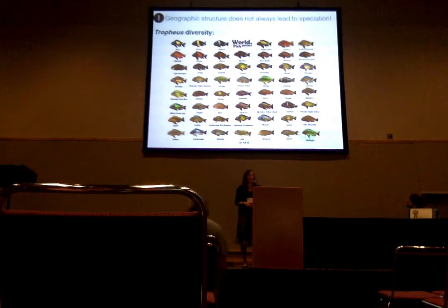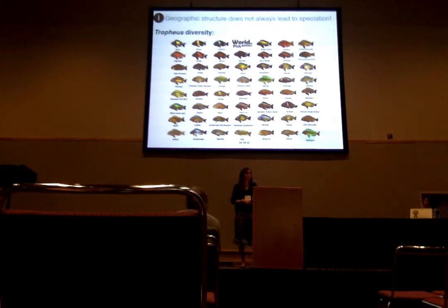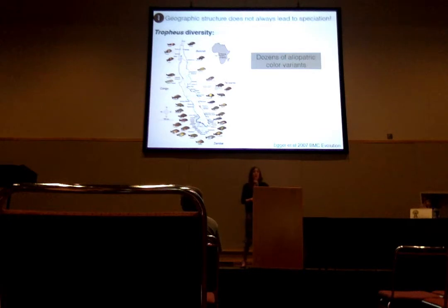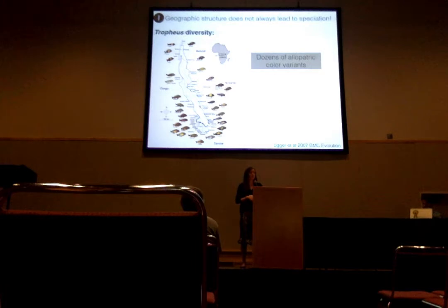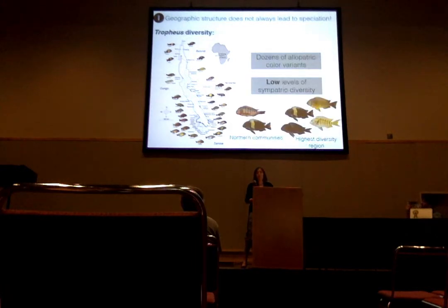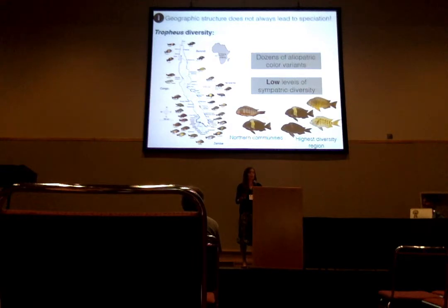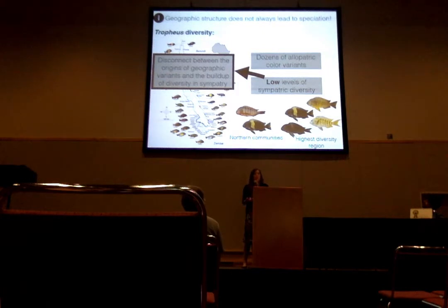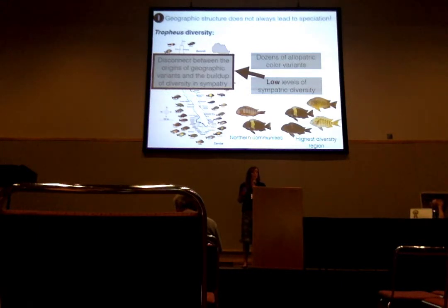To illustrate how geographic structure does not always lead to speciation: one fantastic case of morphological diversity in Lake Tanganyika is the genus Tropheus, which has dozens of allopatric color variants distributed at distinct rocky patches around the lake. But there are low levels of sympatric diversity in this genus — most of the lake has only two of these types together, and a restricted part of the lake has up to four. This suggests that although Tropheus has no trouble forming geographic variants, there is a fundamental disconnect between the origins of those geographic variants and the buildup of diversity in sympatry. Otherwise, we would see communities with dozens of Tropheus variants in sympatry.